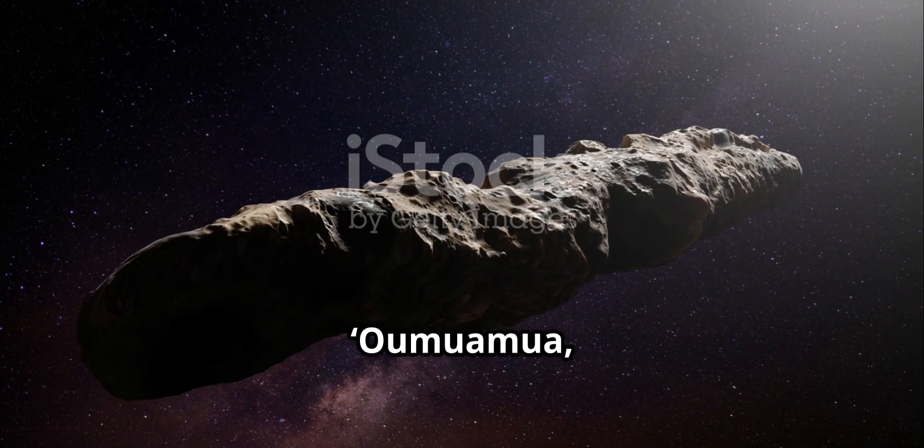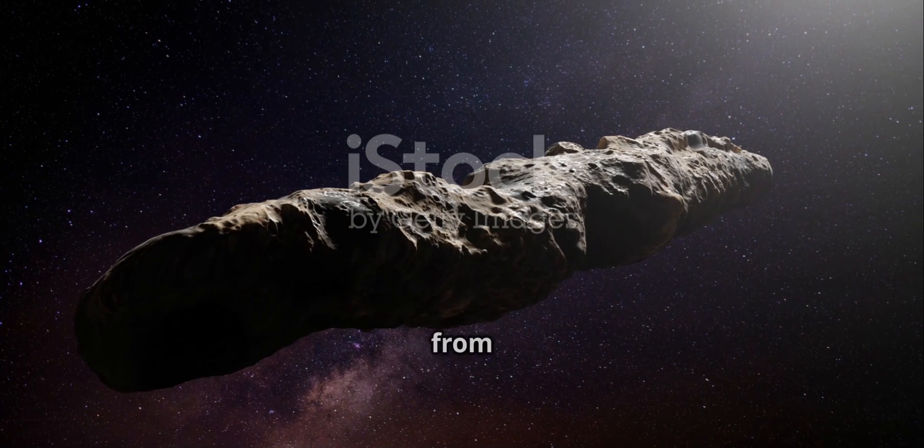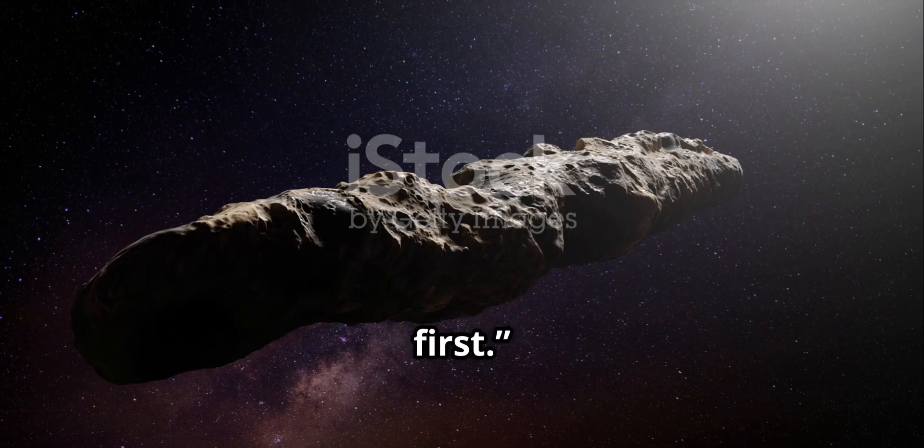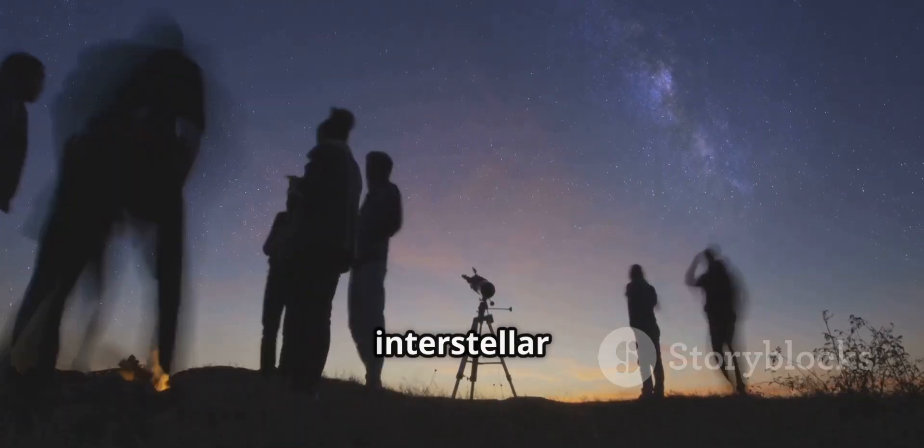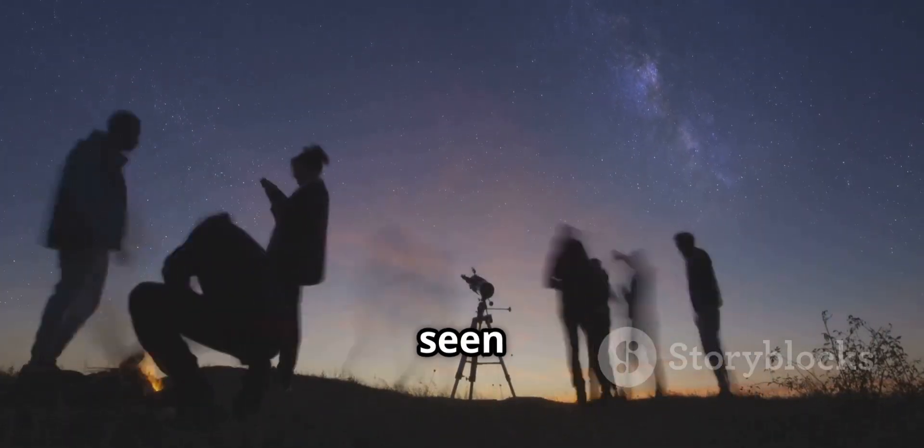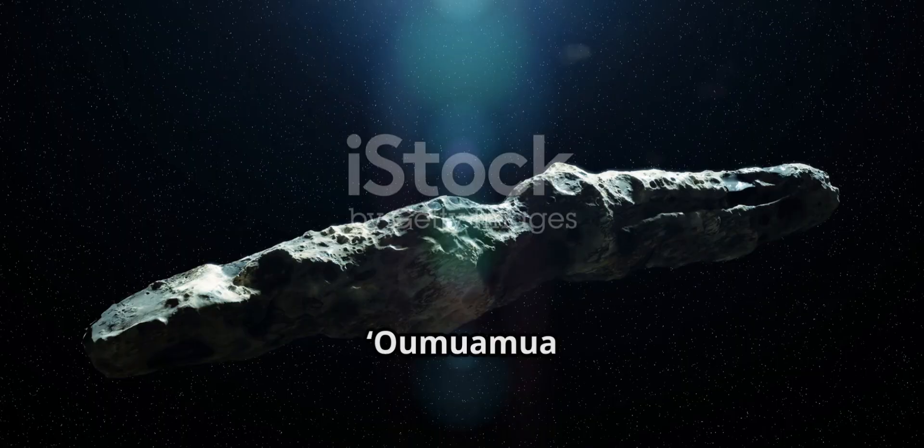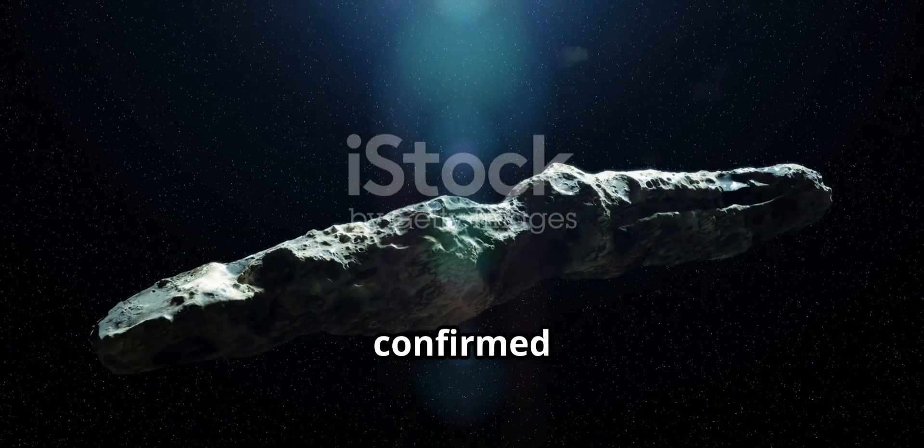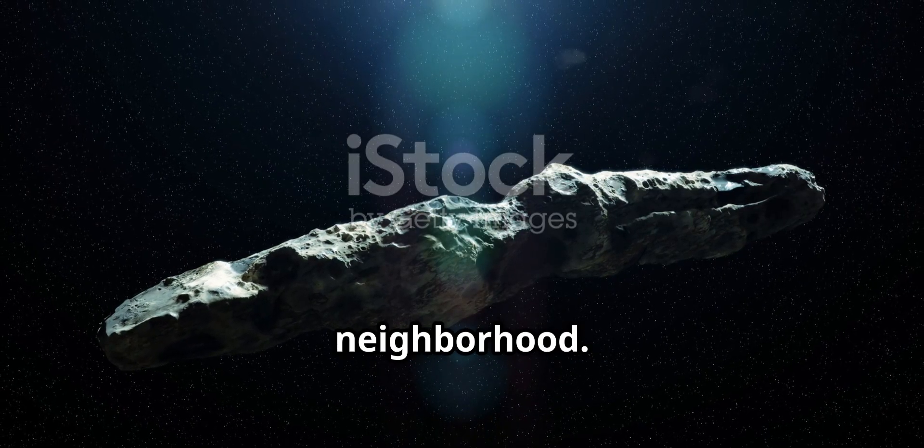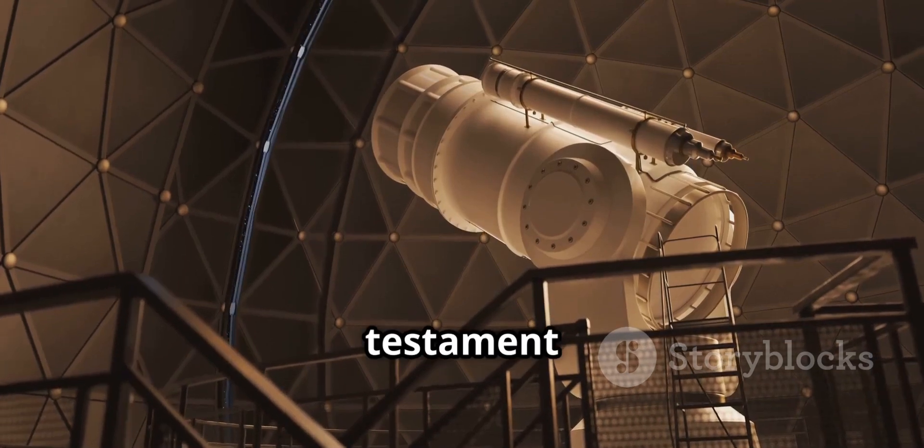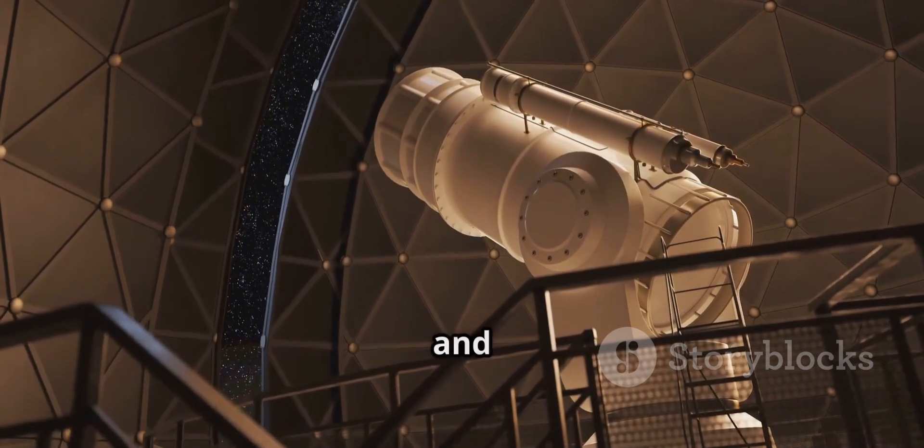The object was named 'Oumuamua, Hawaiian for a messenger from afar arriving first. For centuries we'd theorized about interstellar objects but never seen one until now. 'Oumuamua was the first confirmed visitor from another stellar neighborhood. Its discovery was a testament to our advancing technology and vigilance.